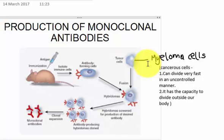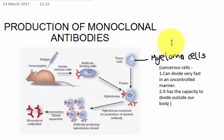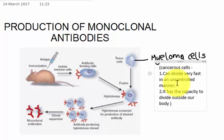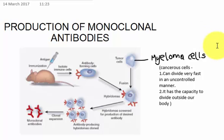Then after the formation of antibodies, the myeloma cells — which generally increase monoclonal antibodies — are taken from a bone marrow tumor. So these are a kind of tumor cells, very cancerous. As we already discussed, they have the ability to divide in an uncontrolled manner and also have the capacity to divide outside the body.